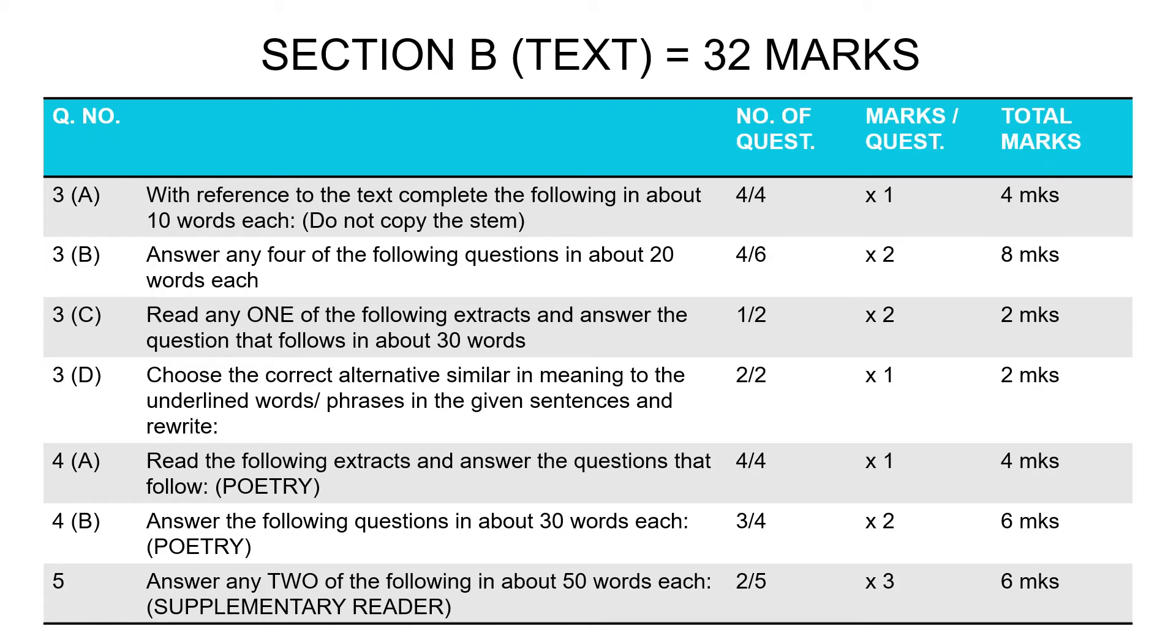Question 4A and B is all about your poetry. You have reference to context from the poems. You have two extracts, two questions each, giving you four marks there. This includes your figures of speech asked in 4A. 4B is question answers from the poetry section, which are long answers—any three out of four. This revolves around your basic understanding of the central idea, the themes, and the analysis of the poem. Three out of four there, two marks per question, gives you six.